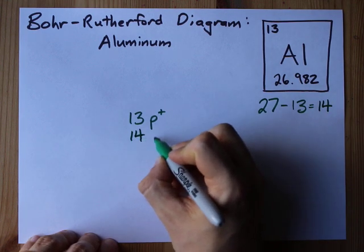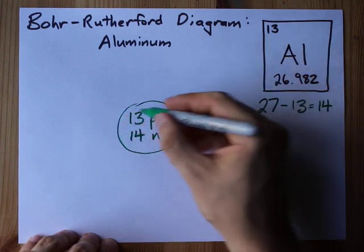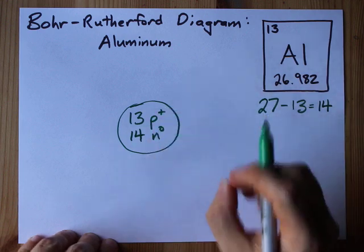I'm going to write my 14 neutrons in there. That's a mass number in total of 27. That all makes sense so far. That's my nucleus.